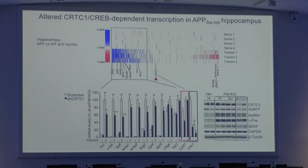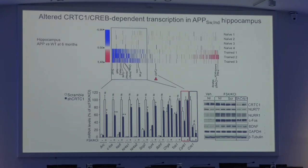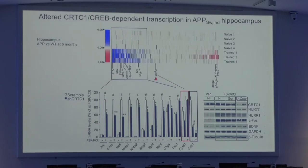To test whether these CREB-dependent genes also depend on the co-activator CRTC1, we transduced cultured hippocampal neurons with an shRNA for CRTC1. We found that most of these genes are indeed dependent on CRTC1 — there is downregulation after transduction with the shRNA for CRTC1. One gene, C-fos-like C61, which is independent of CRTC1, was not changed. This indicates there is altered CRTC1-CREB-dependent transcription in the hippocampus of APP mice, especially after memory training, and protein levels are also reduced.